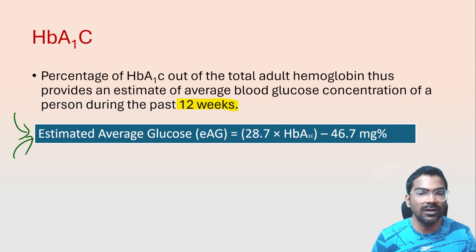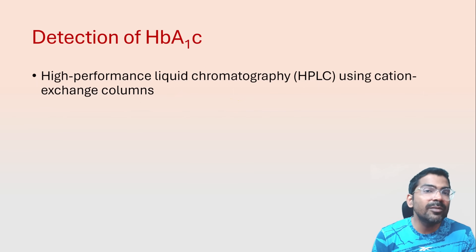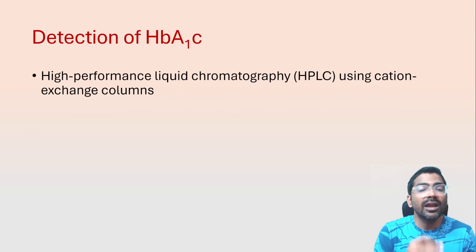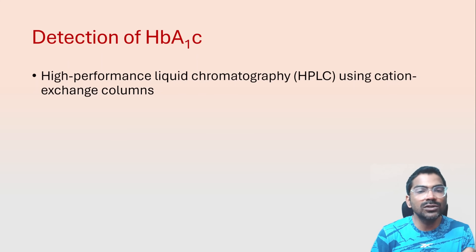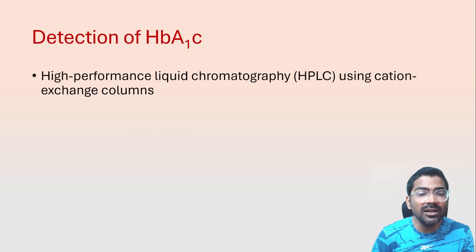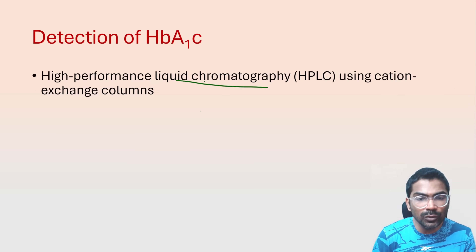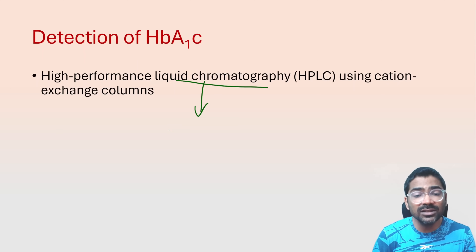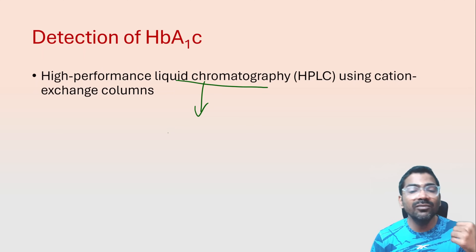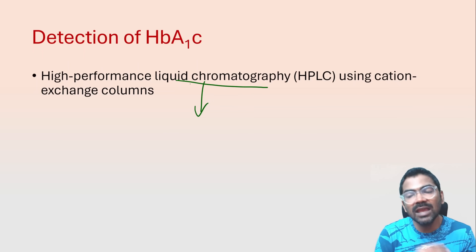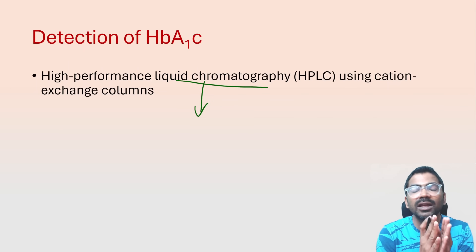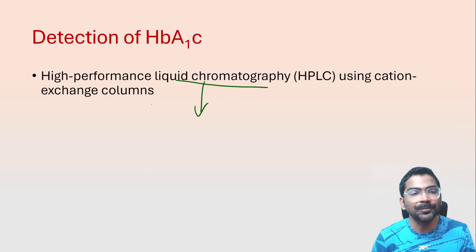In the clinical laboratory, HPLC using a cation exchange column is the most common technique used for detection of HbA1c. HPLC is also used for detection of hemoglobin variants like thalassemia, and the same HPLC is used for detection of HbA1c as well.